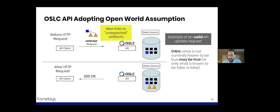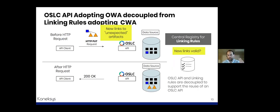But if an OSLC API supports cross-domain linking and links to unexpected targets, we could end up with chaos — all kinds of rubbish links created by API clients. We can prevent this. Engineers love the closed-world flavor, and for good reasons. We can still define linking rules to prevent that chaos — but ideally these linking rules should be decoupled from the OSLC API, so that the OSLC API can be reused in many different organizations, contexts, and projects. Sometimes a certain link will be considered valid and sometimes it won't, but that's defined and managed separately from the OSLC API — in a registry for linking rules.